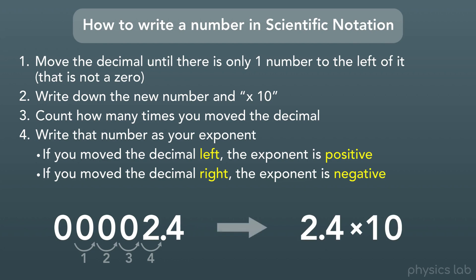Next, we write down this number, 2.4 times 10. And finally, we count the number of times that we move the decimal, which was 4 times, and we write that as our exponent.